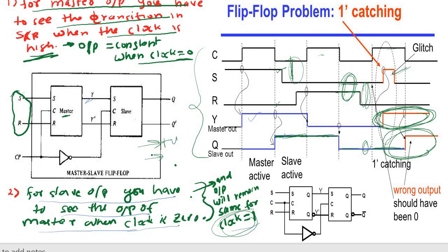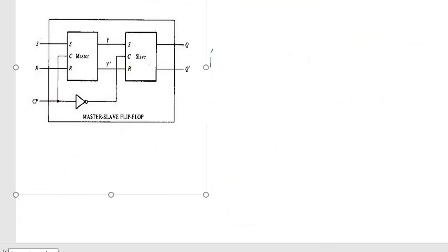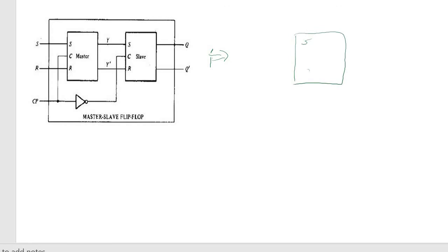This master-slave flip-flop is a negative-triggered flip-flop because the slave responds when the clock is zero. This circuit can be represented as a single block symbol — a bubble on the clock input indicates negative (edge) sensitivity. All applications of flip-flops in digital electronics, such as counters, registers, and frequency dividers, use master-slave flip-flops.